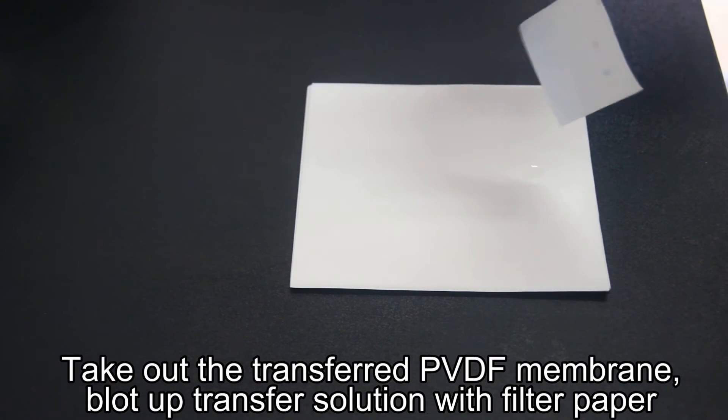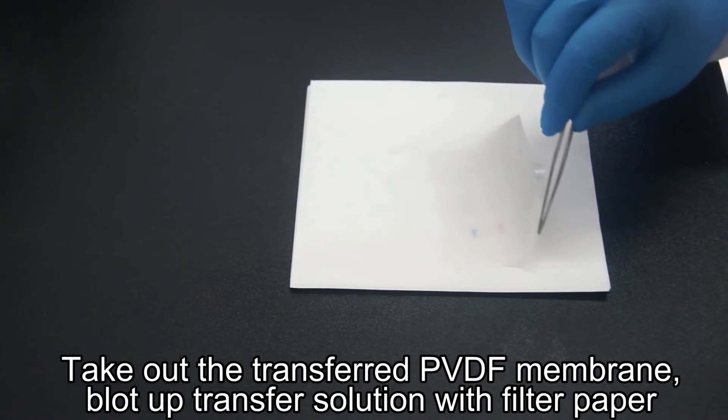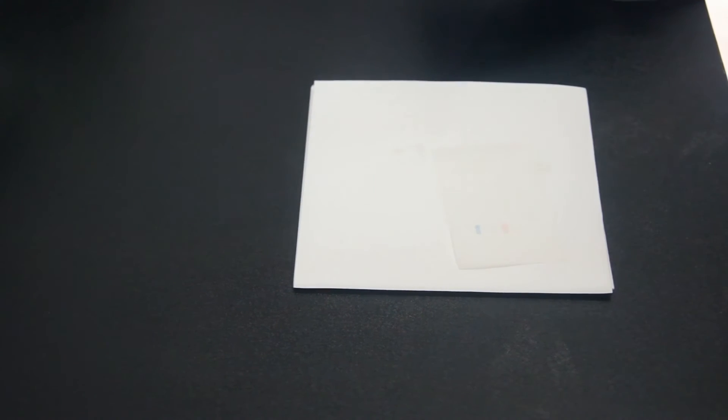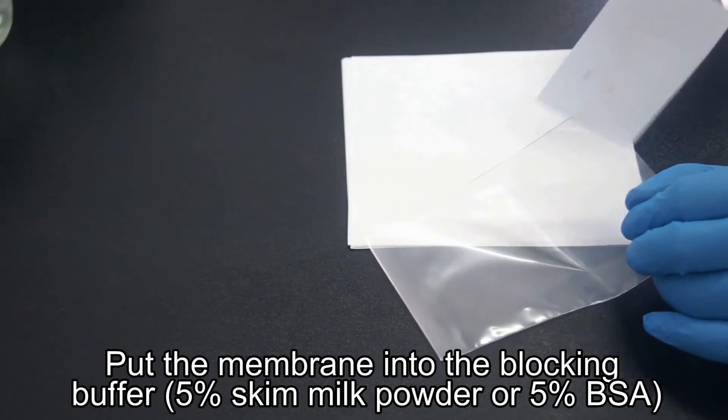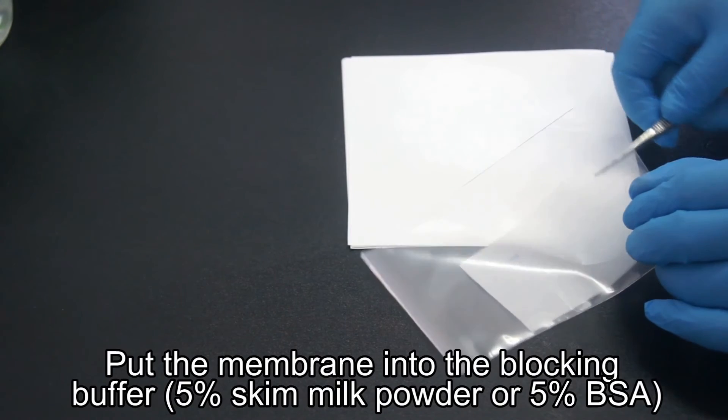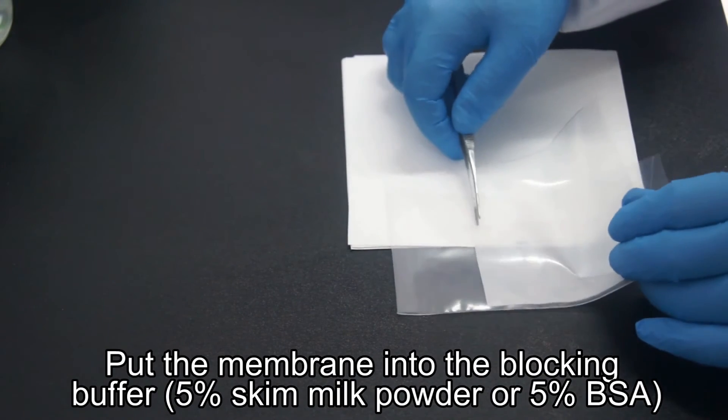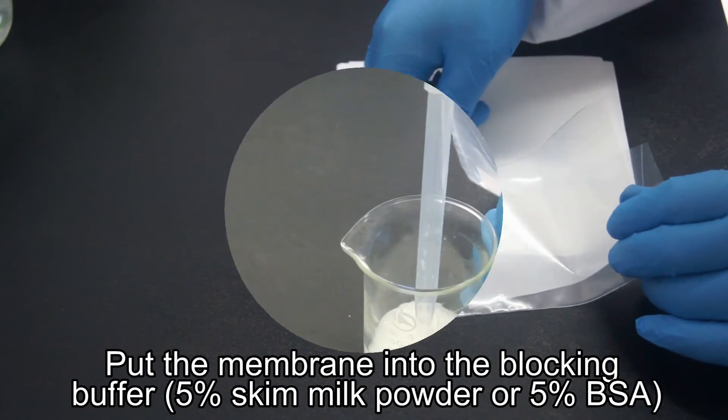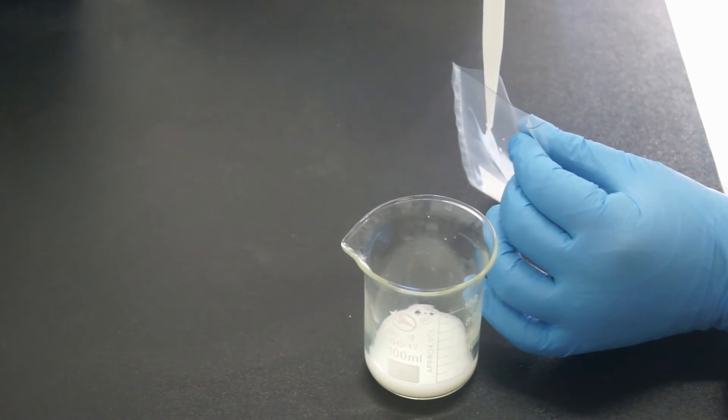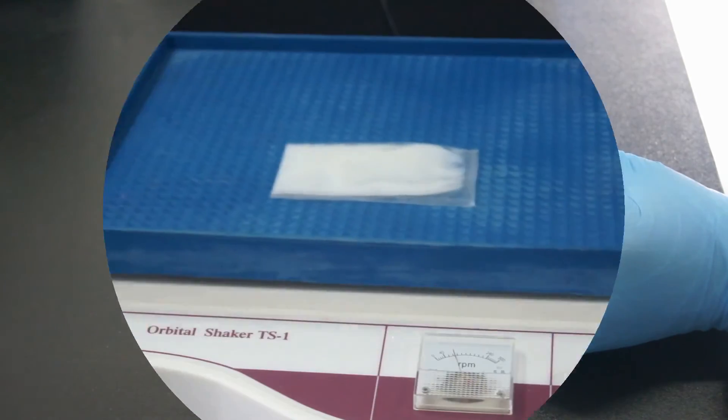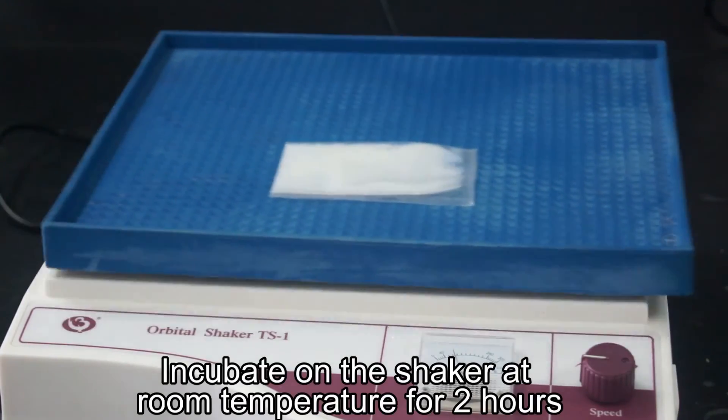Blocking: Take out the PVDF membrane after transferring is finished. Blot the transfer buffer up with filter paper. Put the membrane into a blocking implement. Add either 5% skimmed milk TBST solution or 5% BSA TBST solution to block the membrane. Incubate on the shaker for 2 hours at room temperature.